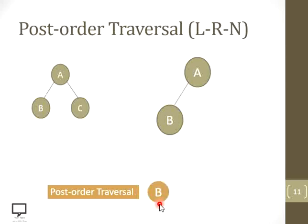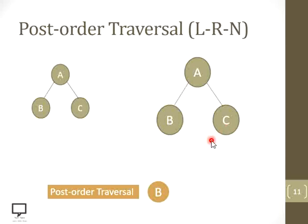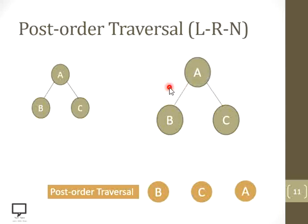After processing B, we return back to root node A and check for its right child. A is having a right child, so we step down to C. We make C the root node and check whether it has a left child — no — or a right child — no. So we process C and return back to root node A. As we have done with its left child and right child, it is now the turn to process the root node A.